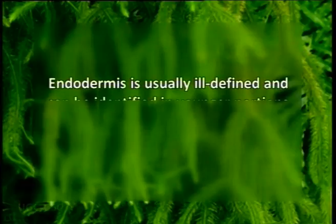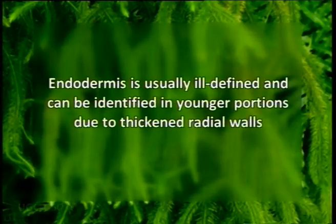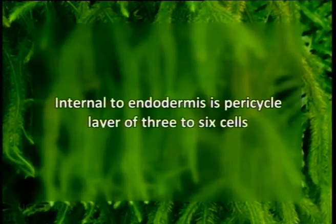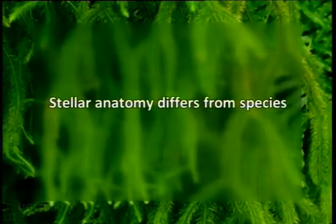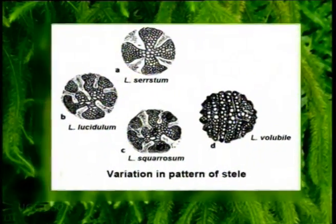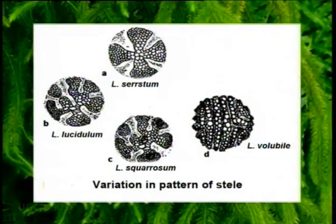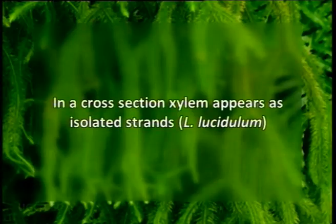Endodermis is usually ill-defined and can be identified in younger portions due to thickened radial walls, known as Casparian strips. Internal to the endodermis is a pericycle layer of three to six cells. Stele anatomy differs from species to species and even within a single species. Young plants in all species conform to a single pattern: a single row of xylem with radiating arms and phloem in between xylem arms. Xylem and phloem are separated from each other by a layer of stellar parenchyma. In some species, irregular and increased furrowing of xylem takes place, and in cross-section it appears as isolated strands, as in Lycopodium lucidulum.